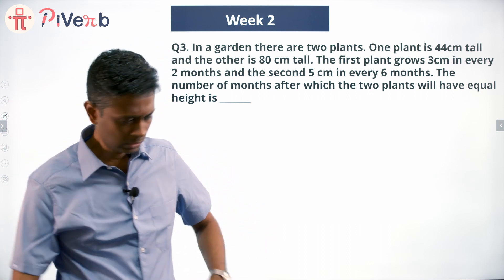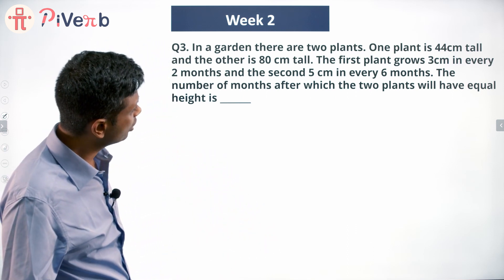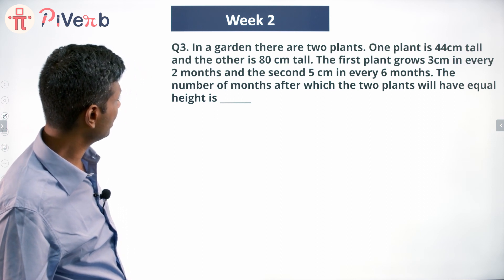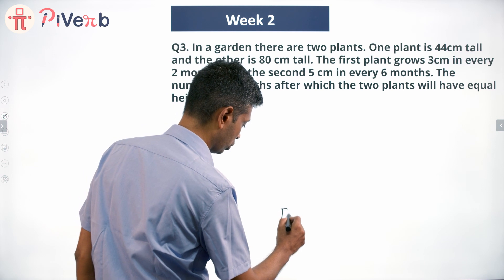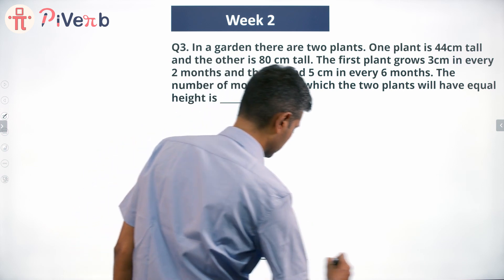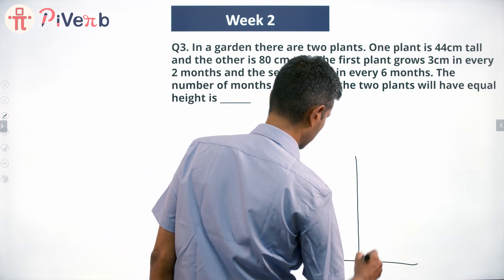In a garden there are two plants. One plant is 44 centimeters tall and the other is 80 centimeters tall. So this is 44 centimeters tall, and this one is 80 centimeters tall.